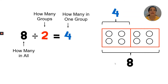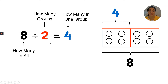Now I can complete my division equation because I've solved for the unknown — how many in one group — and that is my quotient. I can say that 8 divided by 2 equals 4.